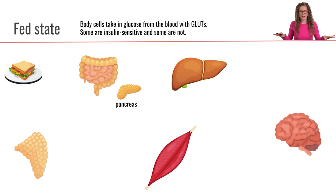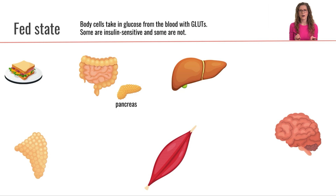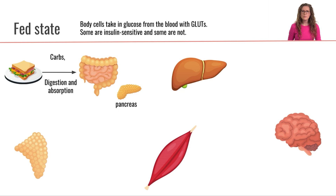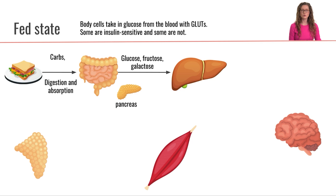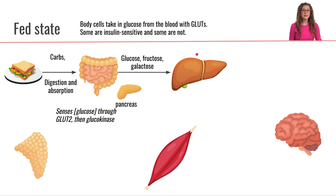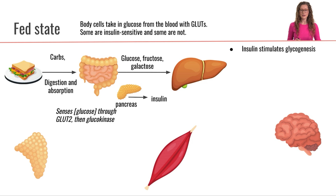Now let's take more of a systemic approach. We've been very focused on an individual cell, so now let's build in more details on the systemic metabolism we talked about during energy foundations. We've eaten a meal that has some carbs in it, digested and absorbed them in their monosaccharide form across the intestine, and now they are traveling through the portal circulation directly to the liver. The pancreas can sense this increase in blood glucose concentration, which is going to stimulate the pancreas to secrete insulin.